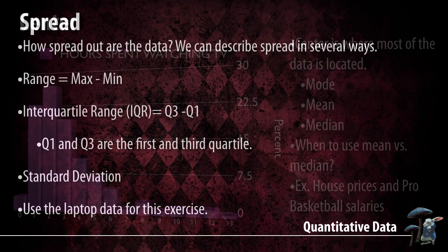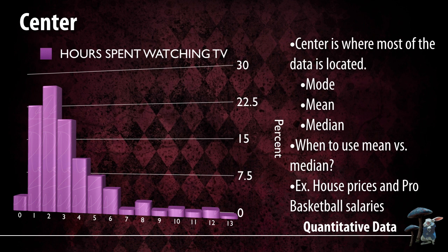Next is center. Center has three descriptions: mode, median, and mean. The question is when do we use each? Most of you are most familiar with the mean because that's how your grade is calculated. The mode is used when you have multiple modes — in other words, when you can see several distinct peaks throughout your graph, not just one peak. In that case, it may be better to use the mode, though that's a relatively uncommon situation.